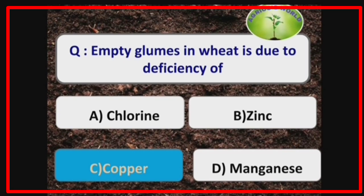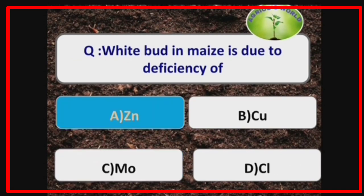Khaira disease is due to the deficiency of zinc. White bud in maize is due to the deficiency of zinc. Khaira disease of paddy is also due to the deficiency of zinc.